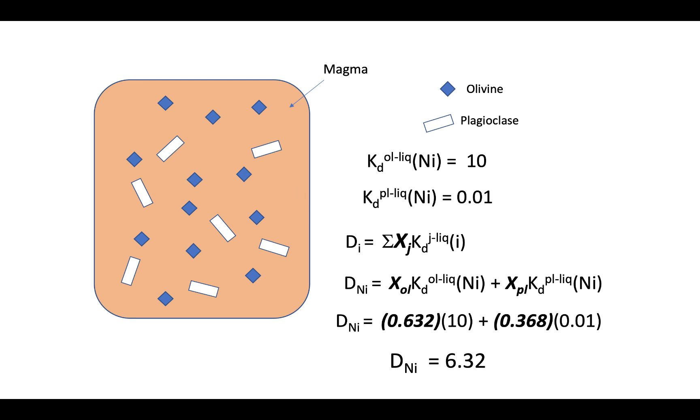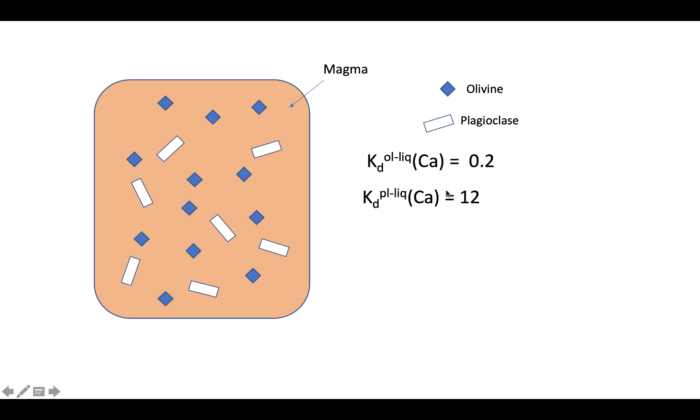Let's take a look at calcium. In our previous example, we found out that calcium is incompatible in olivine, but compatible in plagioclase. For this very same system here, we can do the same kind of calculation.